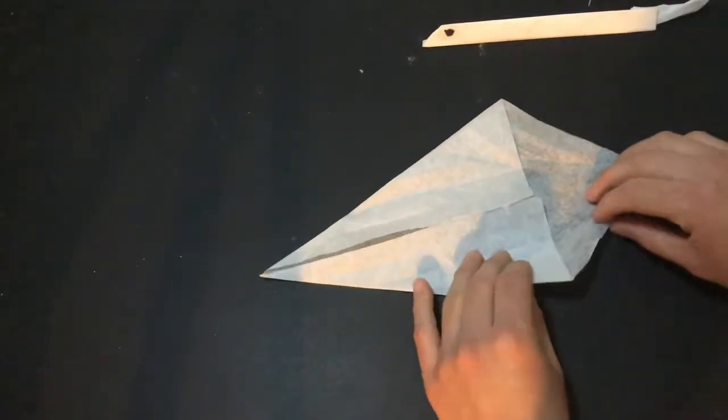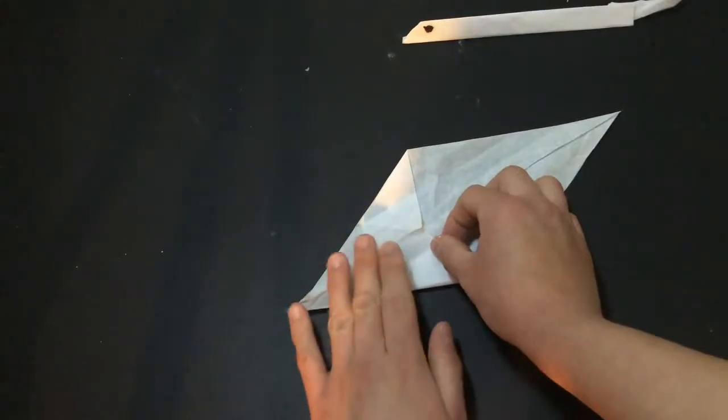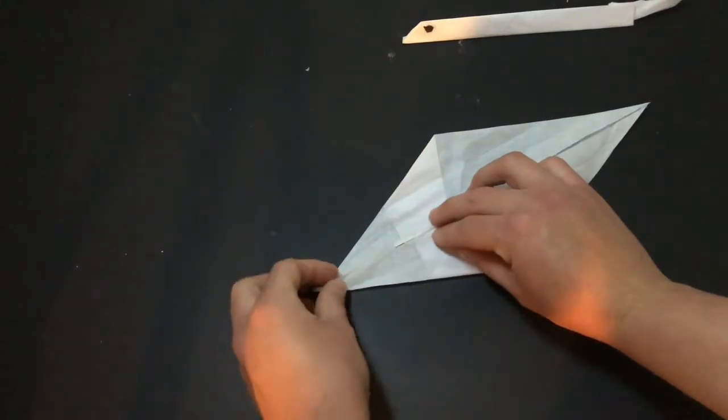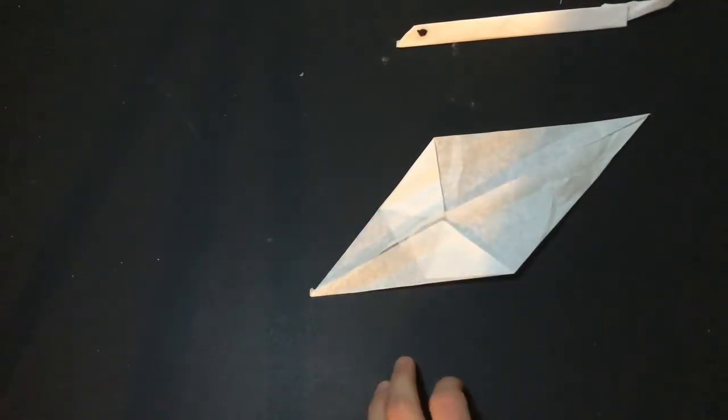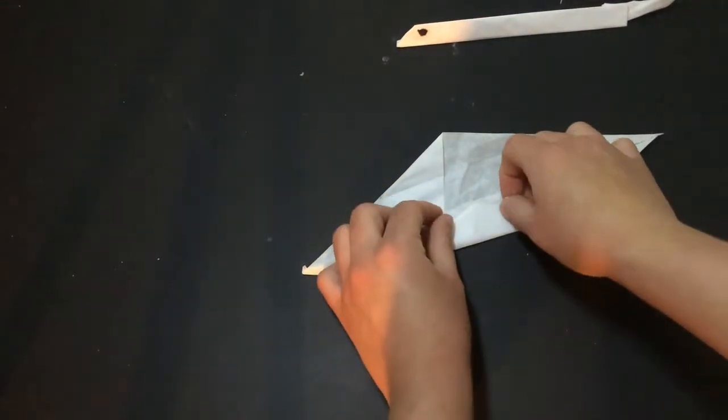Then we're gonna do a similar thing on the other side, turning our kite shape into that of a diamond. So again we're gonna take that outer piece and fold it in and get something that looks like this.